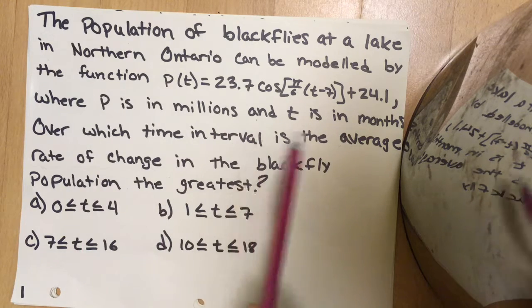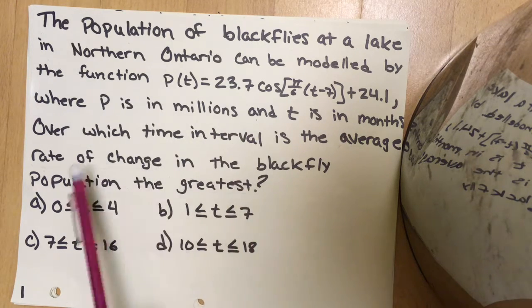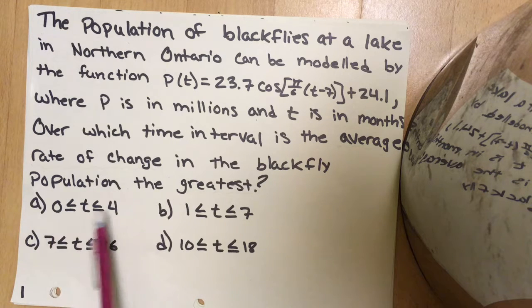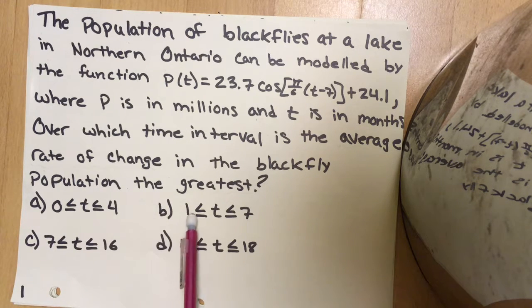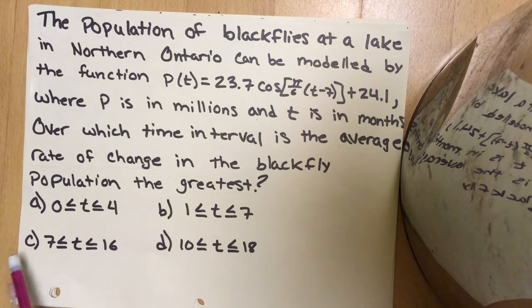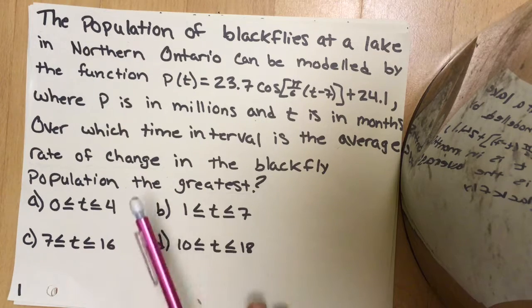Over which time interval is the average rate of change in the blackfly population the greatest? A: from 0 to 4 months, B: from 1 to 7 months, C: from 7 to 16 months, and D: from 10 to 18 months.